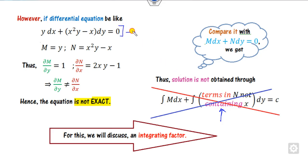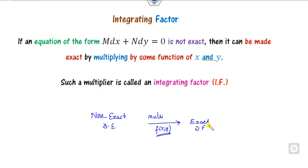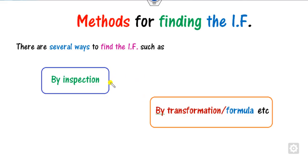So our target is to firstly make this differential equation exact. To make a differential equation exact, we need the integrating factor. The purpose of the integrating factor is to make any non-exact differential equation into an exact differential equation. We multiply with some function f(x, y), and such a function is called the integrating factor. Our target is to find such a function f(x, y).